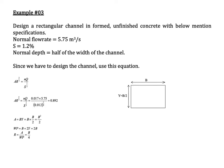Example three: design a rectangular channel formed from unfinished concrete with the following specifications. The normal flow rate is 5.75 cubic meters per second, the slope S is 1.2 percent, and the normal depth is half the width of the channel. Since we are designing the channel, we rearrange the equation accordingly.